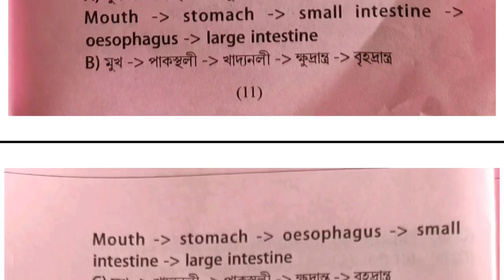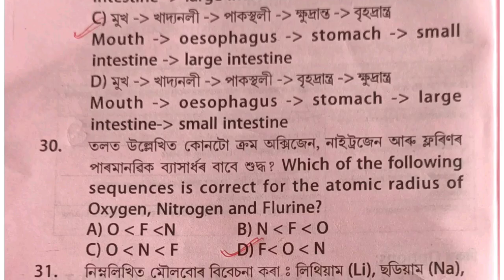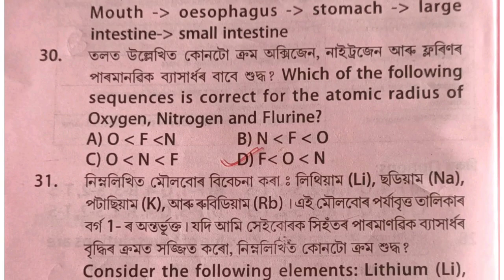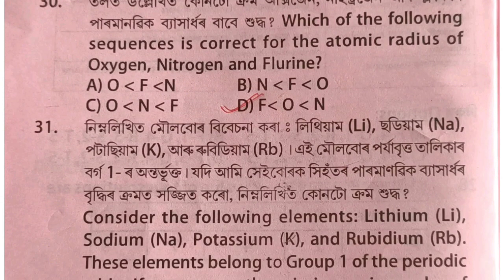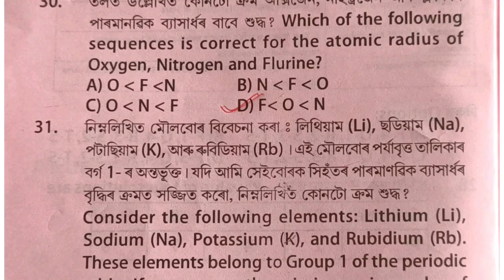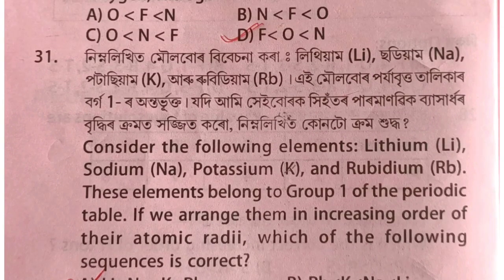Option C is discussed — moving across all good options. For question 30, chrome oxygen nitrogen or fluorine are listed. Option D2 gives fluorine, oxygen, nitrogen order. Question 31 covers lithium, sodium, potassium, rubidium — a periodic table group discussion about zodium and quantum photo.